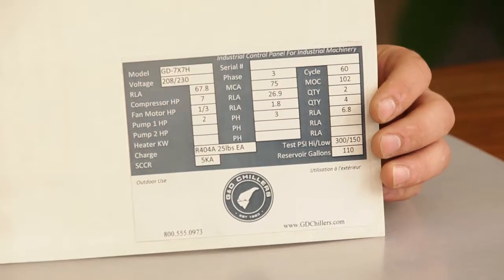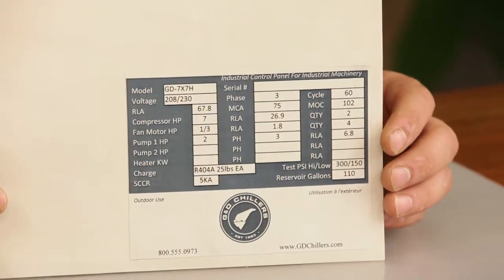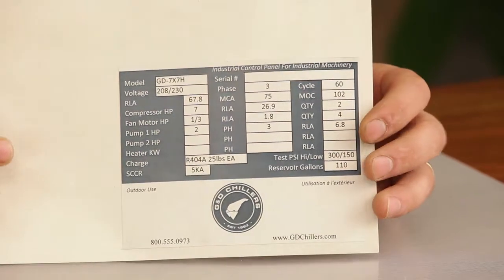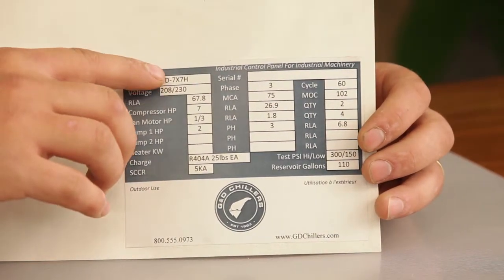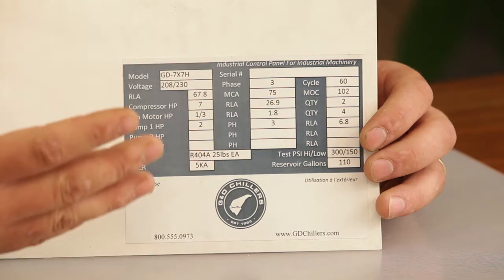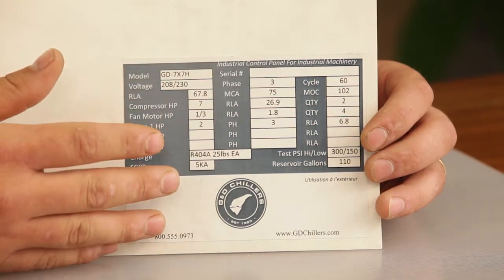Here I've got a spec sticker factory installed on the control panel of every chiller that we send out of our facility. Right here you can see you've got your model number, so depending on the model of your chiller, the voltages and requirements are going to change a little.